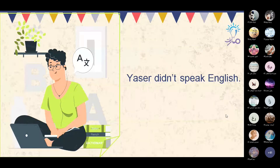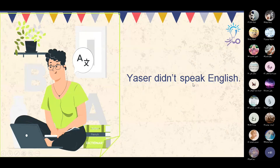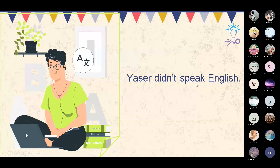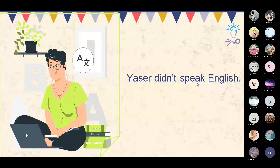مثال أول: Yasser didn't speak English. ياسر لم يتكلم الإنجليزية. الفعل الأصلي هو speak يتكلم، وبالماضي spoke تكلم، لكن هنا وضعنا didn't وأتى بعده speak — أي الفعل في التصريف الأول verb one.